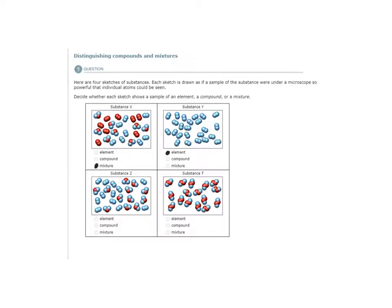Substance Z: I have an element here and a compound here. Because this sample includes both, and they are chemically different but mixed together, this is a mixture.